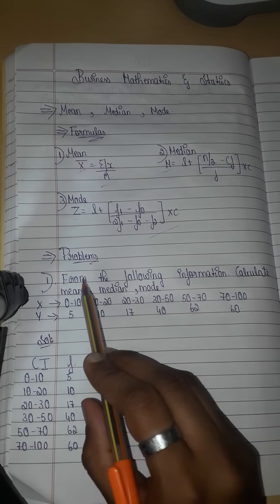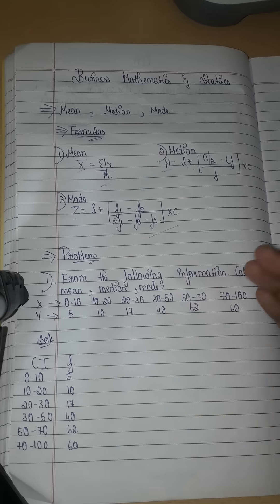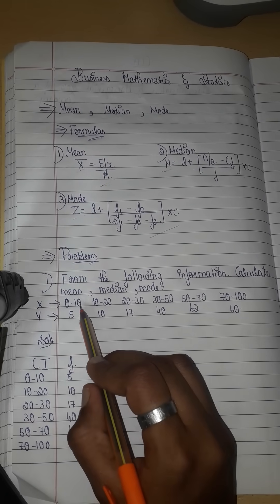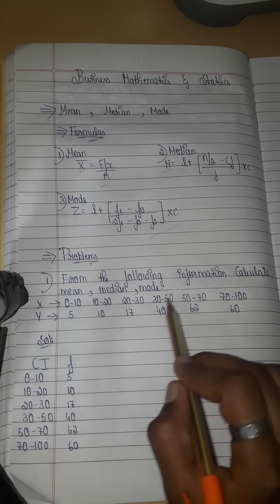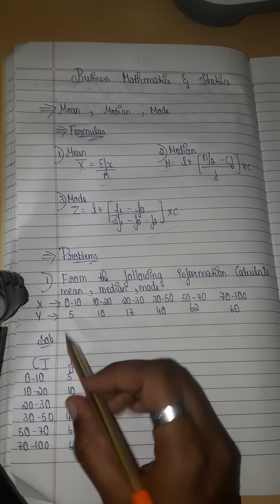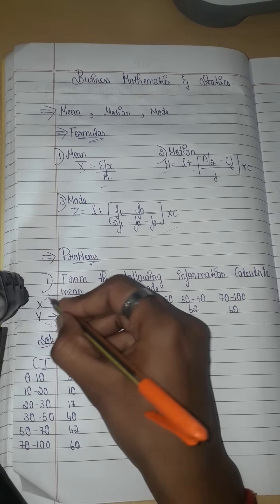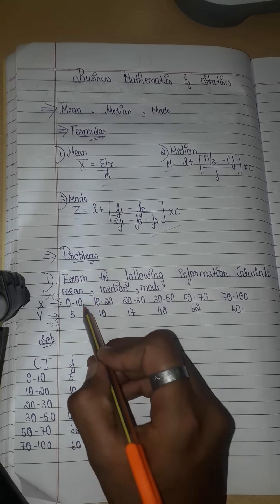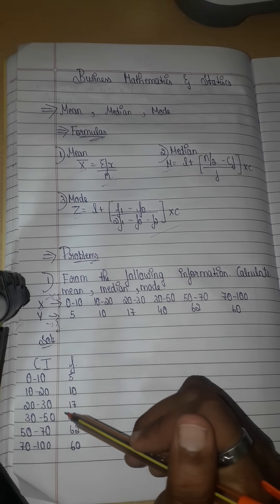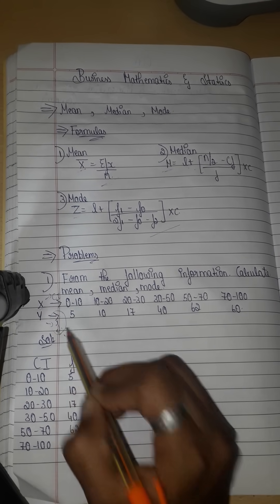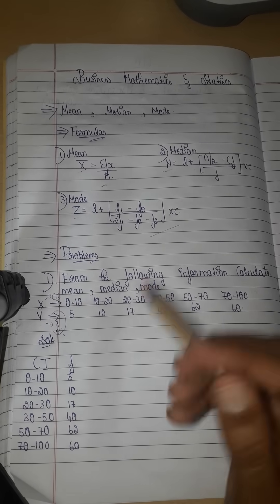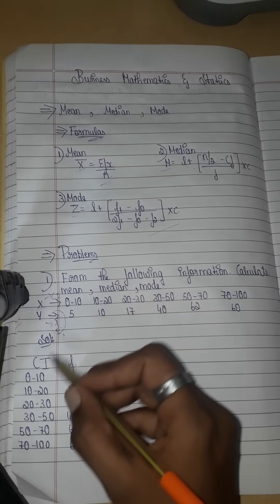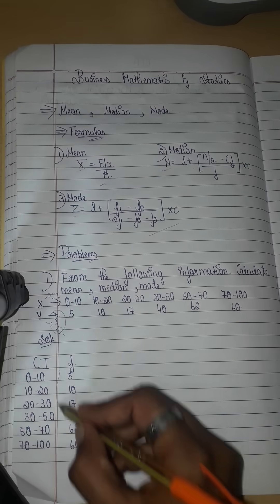The first problem is: from the following information, calculate mean, median, and mode. We have x as class intervals: 0 to 10, 10 to 20, 20 to 30, 30 to 40. Y is frequency. X is the class interval — one single number in x is the class interval. We will note the frequency values and substitute into the formula.